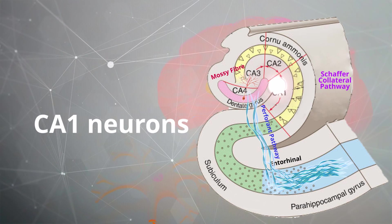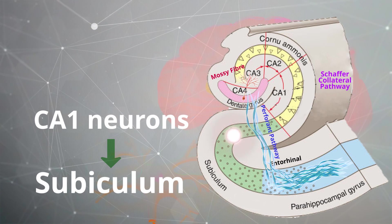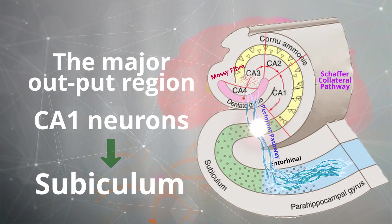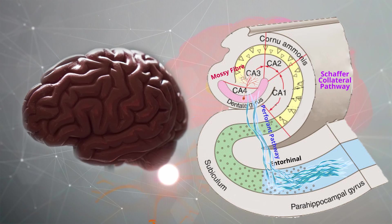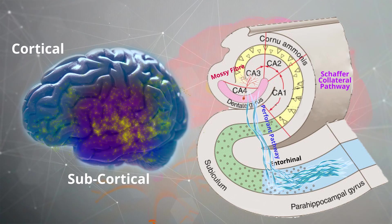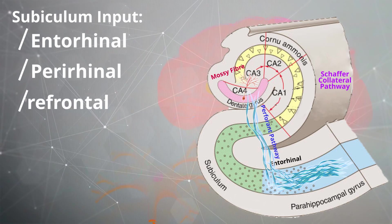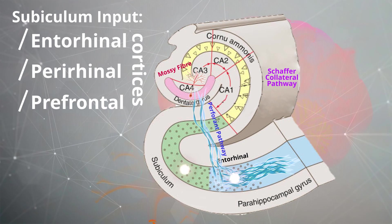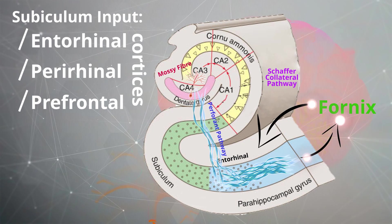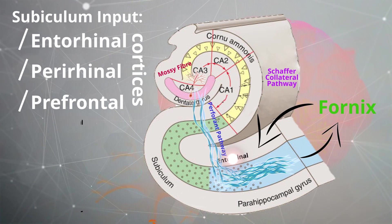Finally, the CA1 neurons will project to the subiculum, which is considered the major output region for the hippocampus. It will go out to the cortical and subcortical regions. The subiculum not only receives cortical inputs from the entorhinal, perirhinal and prefrontal cortices, but it sends projections out to the fornix and back out to the entorhinal cortex in order to complete the loop.